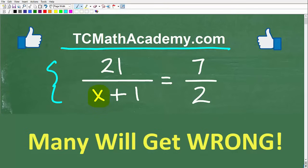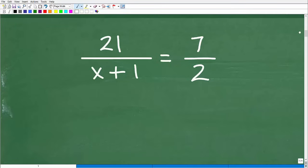But before I do that, go ahead and put your answer in the comment section. And if this video helps you out, don't forget to like and subscribe, as that definitely helps me out. Here again is our problem: we have 21 over x plus 1 equals 7 halves.